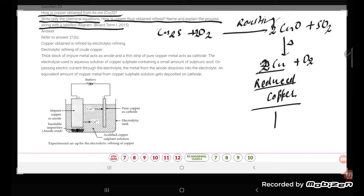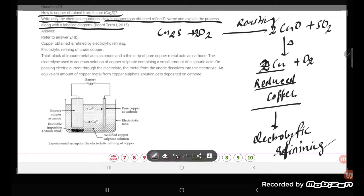Our next step is electrolytic refining. This is the concept - electrolytic refining. So here, let us try to read out. Copper obtained is refined by electrolytic refining.